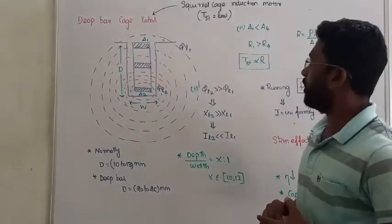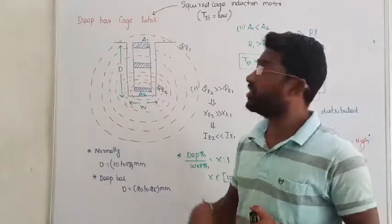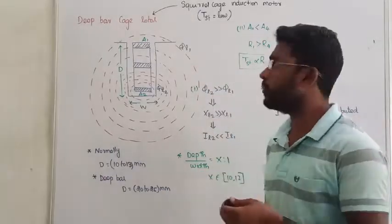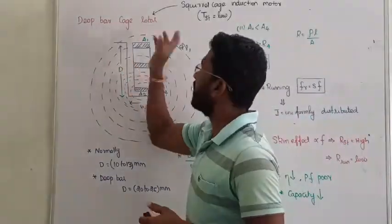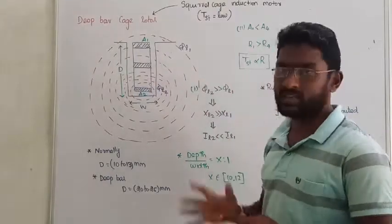We are trying to improve the starting torque of the squirrel cage induction motor. The first part is the deep bar cage rotor. Very simple construction.